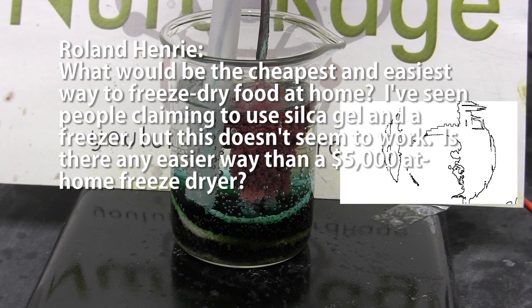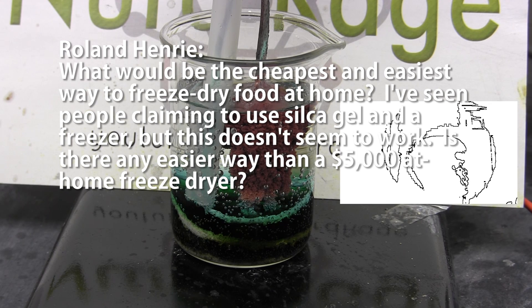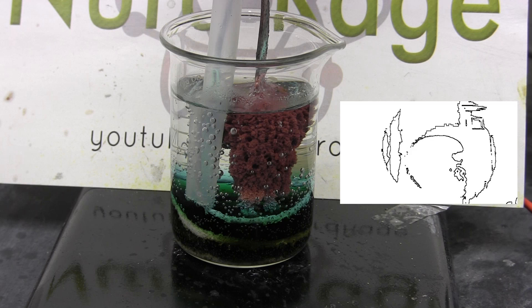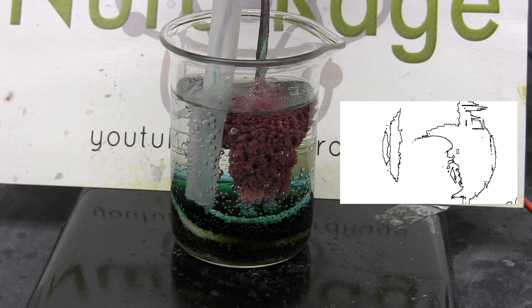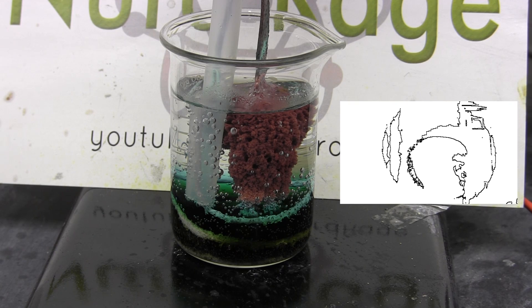The hardest part of a freeze dryer is to maintain good vacuum. You need a powerful vacuum pump that can go below the triple point pressure of water, and it needs to run continuously throughout the freeze drying process. Then there is the cost of the freezer that needs to be exceptionally cold and controllable. These two things can be quite expensive.